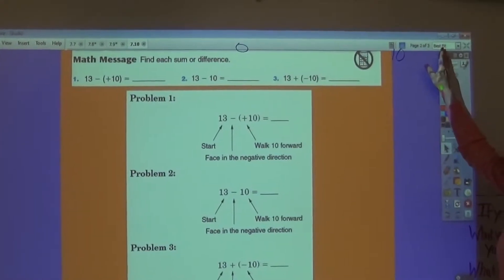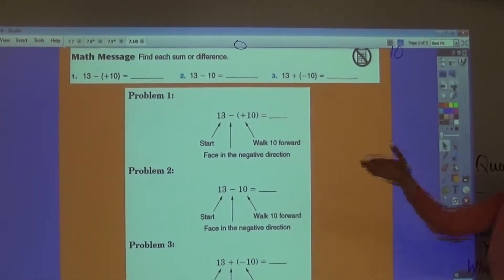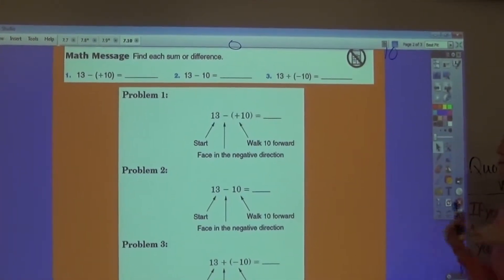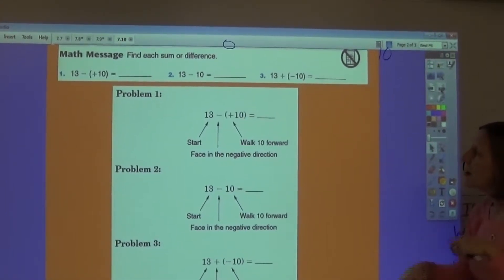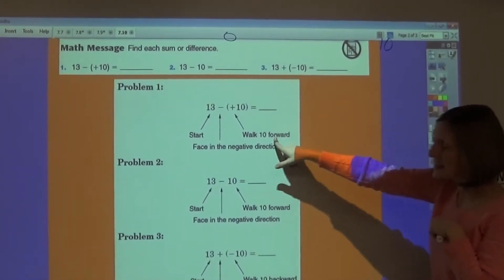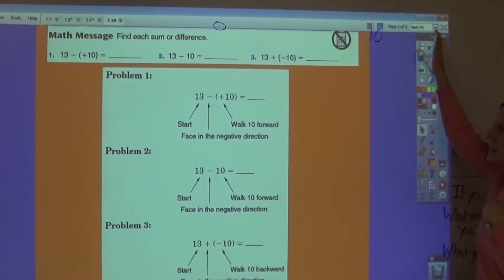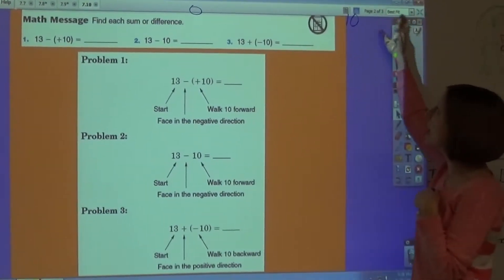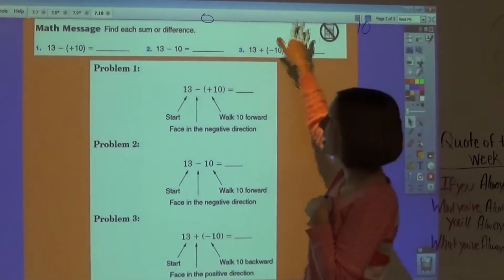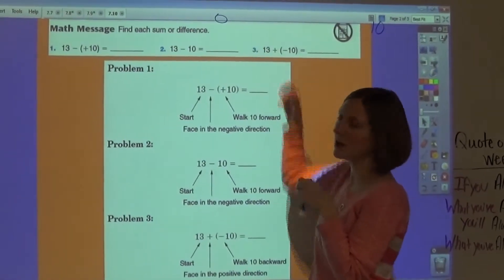Since I'm subtracting, I want to face smaller numbers because I know when I subtract, I'm taking away. Since I'm subtracting a positive number, I'm going to walk forward. So if I'm on the number line at 13 and I walk forward 10 steps, I would end at a positive 3.